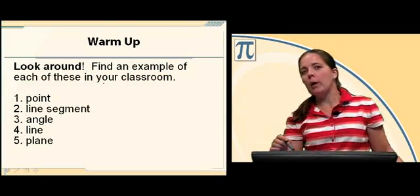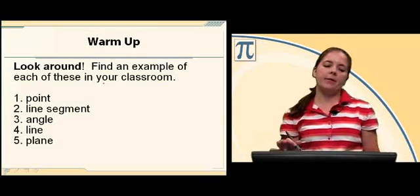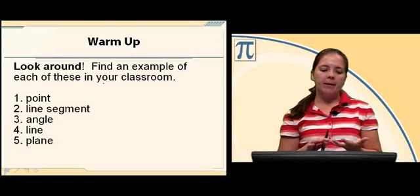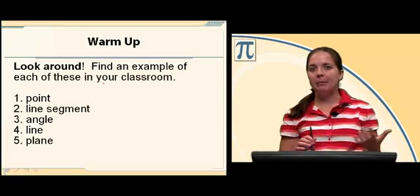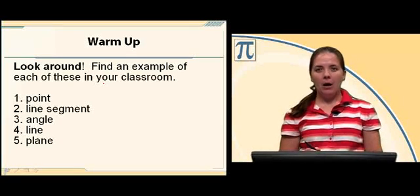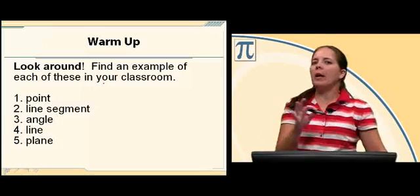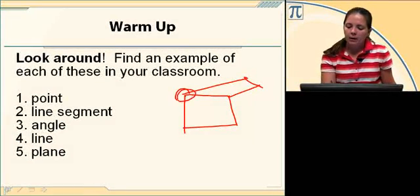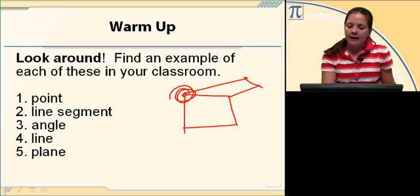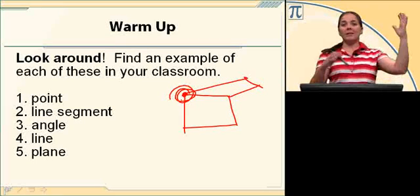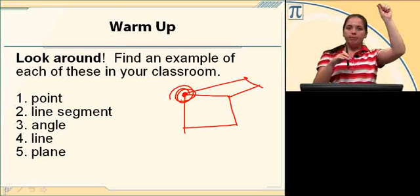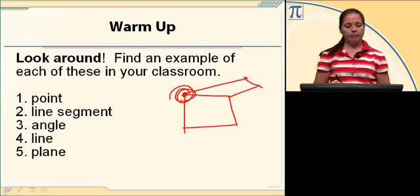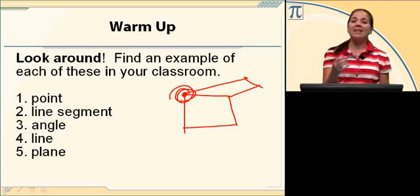Let's go ahead and start with a warm up. Look around the room you're in and see if you can find an example of each of these: point, line segment, angle, line, and plane. A point is a single location in space. You might be looking in your room and see that corner where the walls and the ceiling meet — that's a point. You might have a button on your shirt like mine. That's a point, an example of a point.